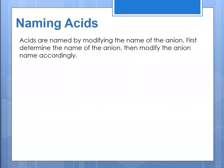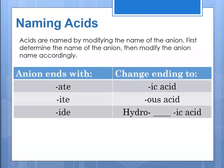Acids are named by modifying the name of the anion. The first thing you want to do is determine the name of the anion, then modify the anion name accordingly. This chart is a helpful way to think about it: if the anion ends in "-ate", we change the ending to "-ic acid". If the anion ends in "-ite", we change it to "-ous acid". And if the anion ends in "-ide", then we change it to "hydro-[root]-ic acid".